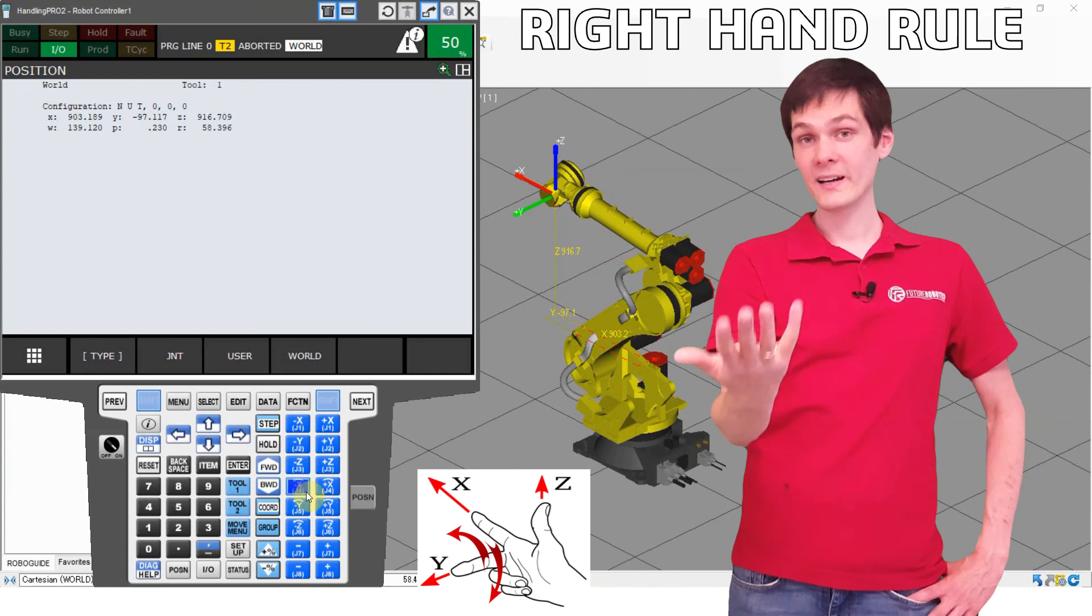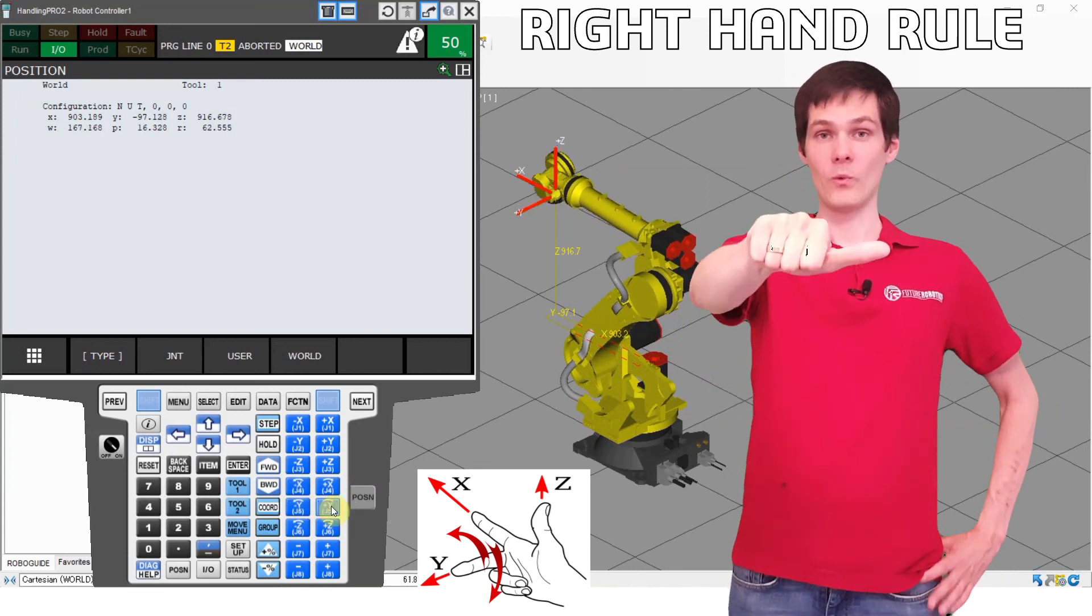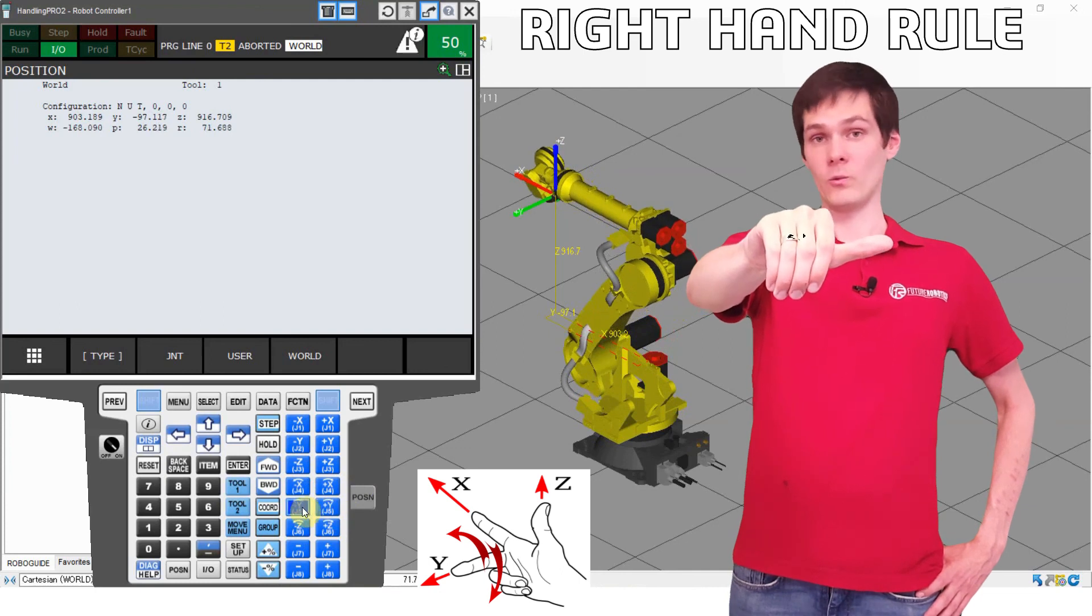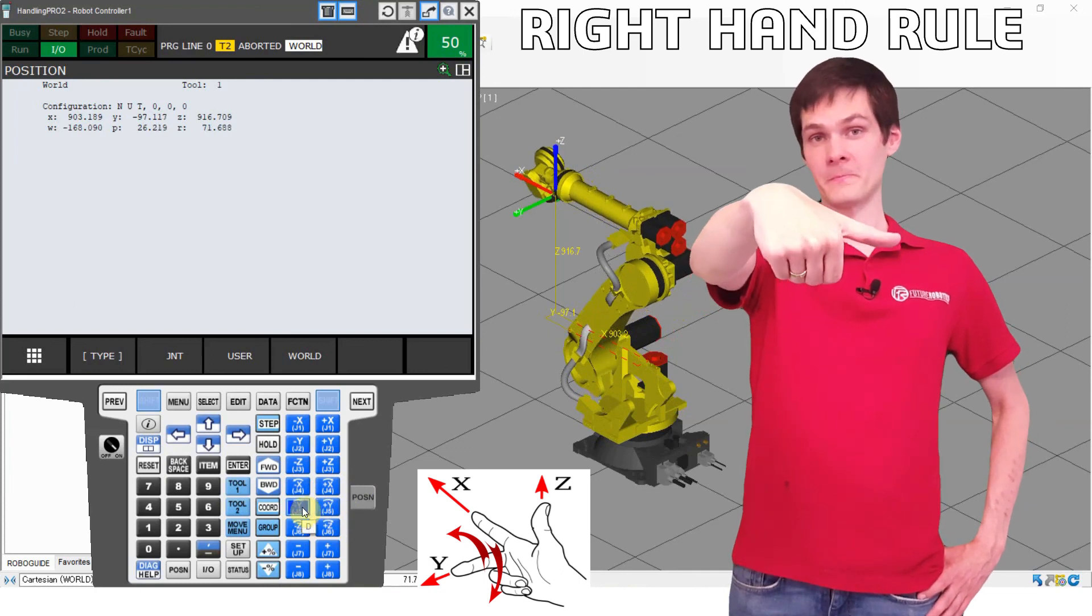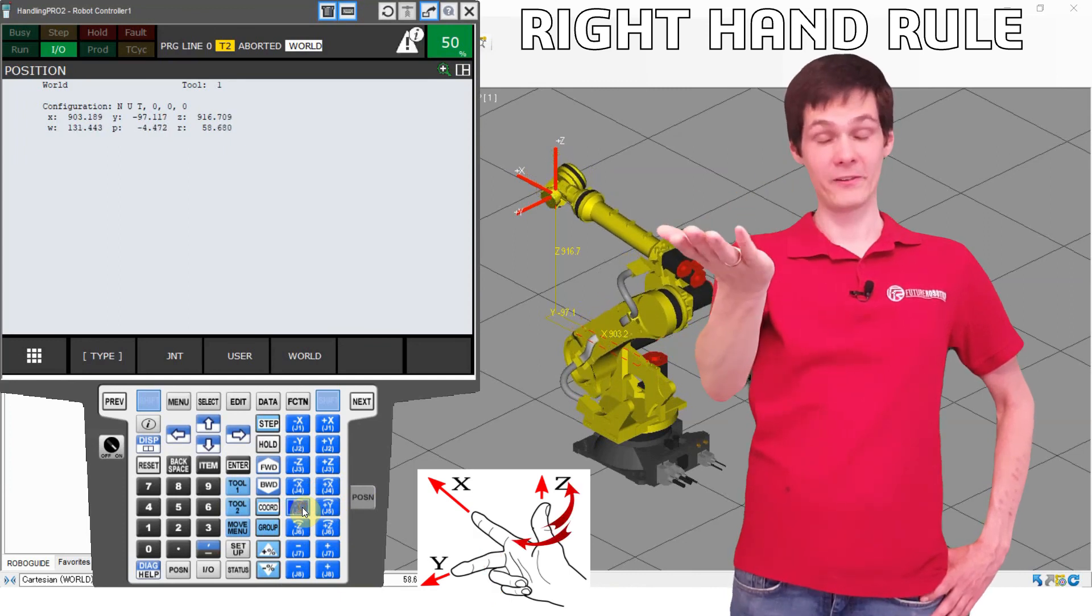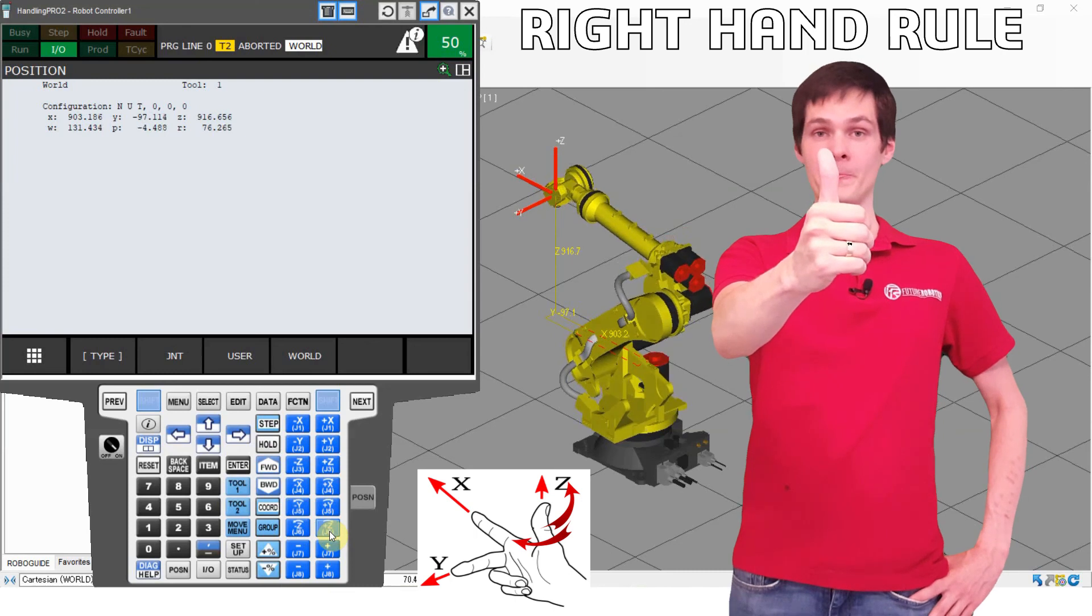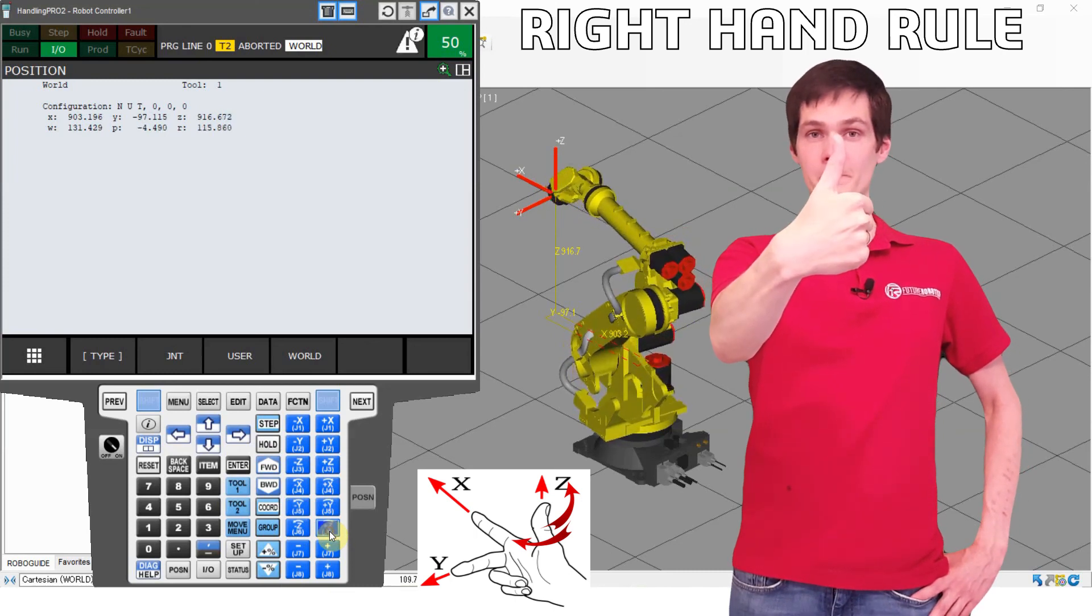What about the y axis? The same thing. Y axis, thumb, y axis, y plus, y minus. And the z I think we can follow. Z axis, your thumb, positive, negative. Pretty easy. It is easy, as I say.